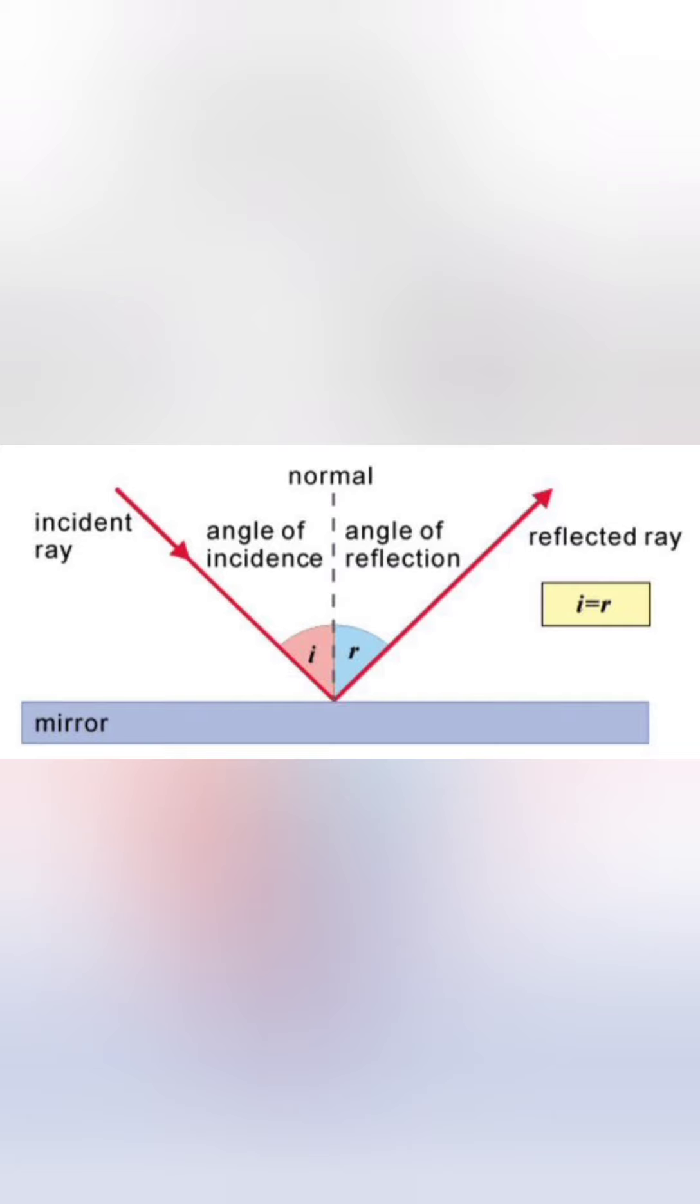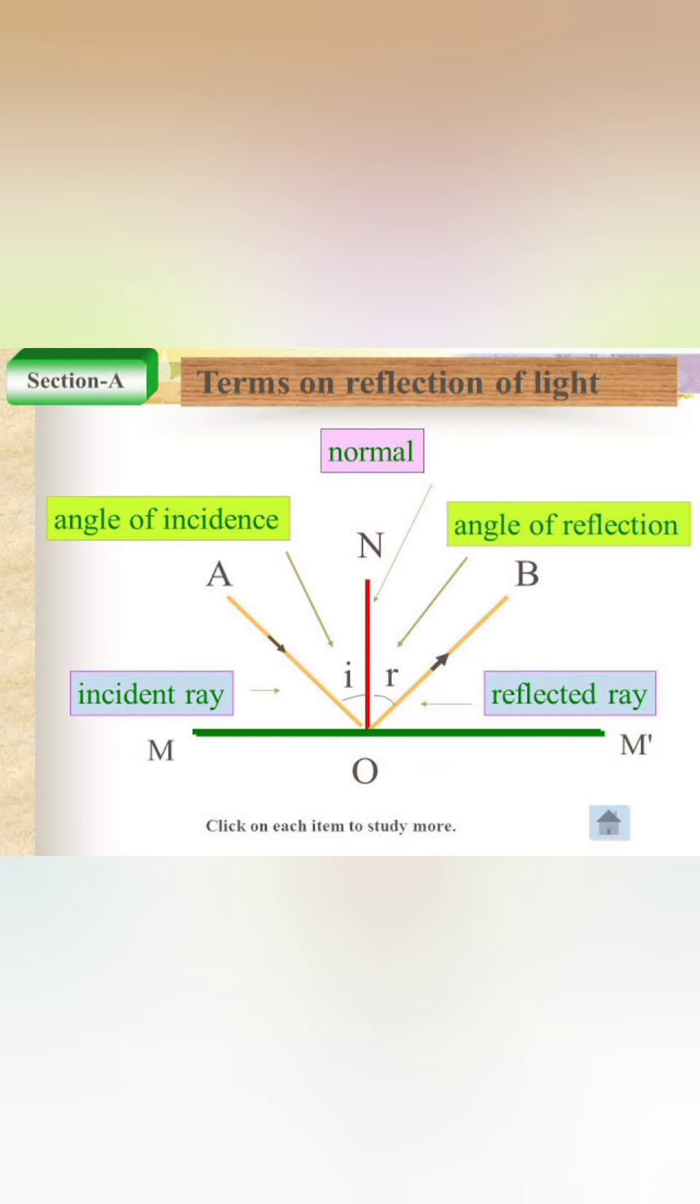Normal: The perpendicular drawn to the surface at the point of incidence is called the normal. Angle of incidence: The angle between the incident ray and the normal is called the angle of incidence. It is represented by the letter i, small letter i.